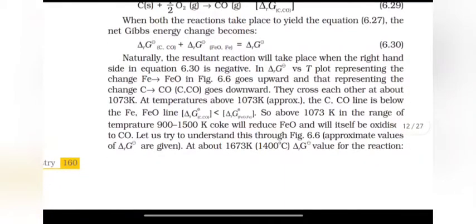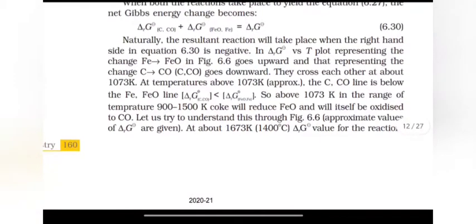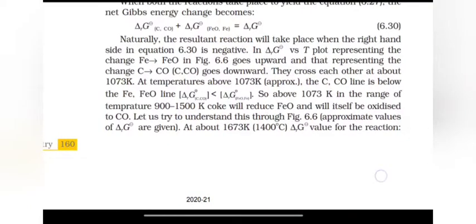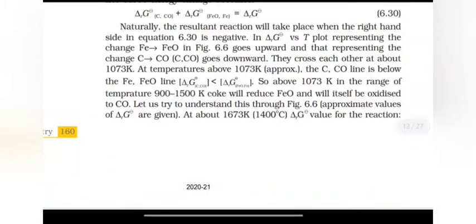ΔG1 plus ΔG2 equals to ΔrG. Naturally, the resultant reaction will take place when the right hand side equation is negative. In ΔrG versus T plot, the line for Fe to FeO goes upward. That representing C to CO goes downward. They cross each other at 1073 Kelvin. At temperatures above 1073 Kelvin, the C to CO line is below the Fe to